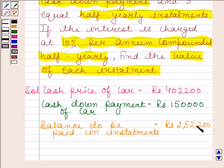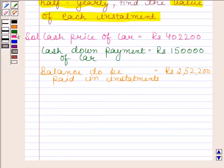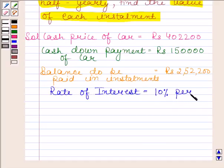This we have got by subtracting cash down payment of car from cash price of car. Now we are given that rate of interest is equal to 10% per annum and this is equal to 5% per half year, as this is compounded half-yearly.